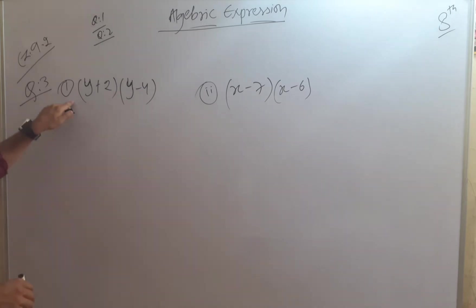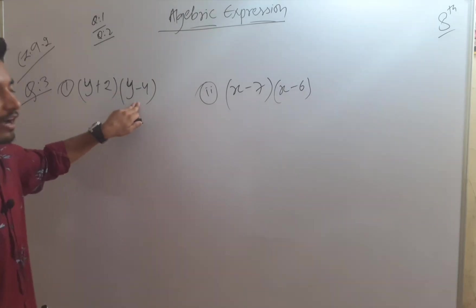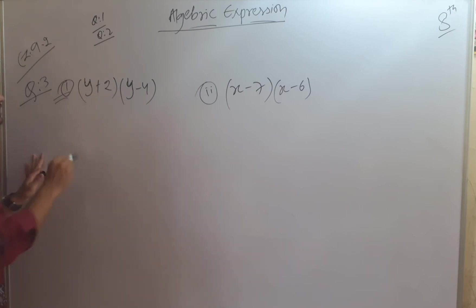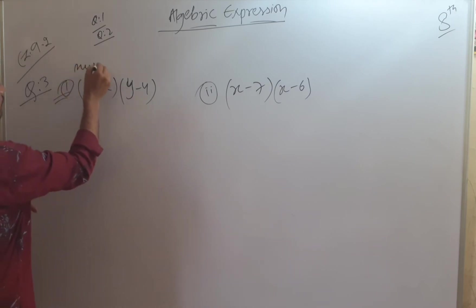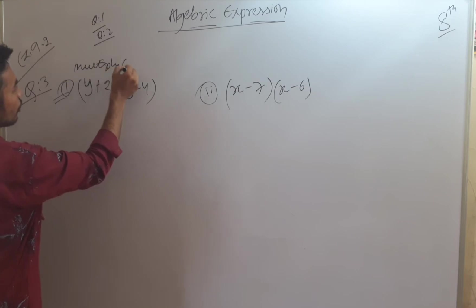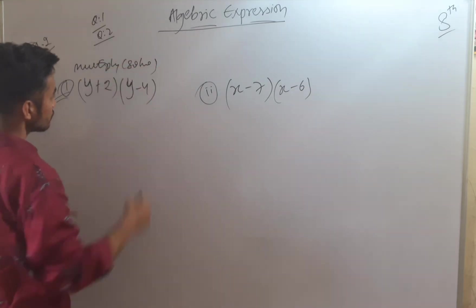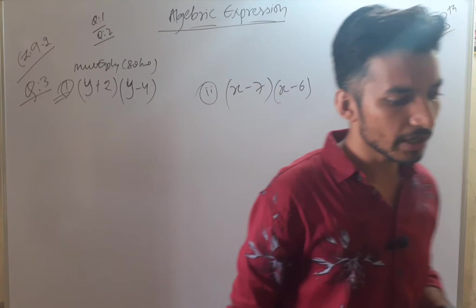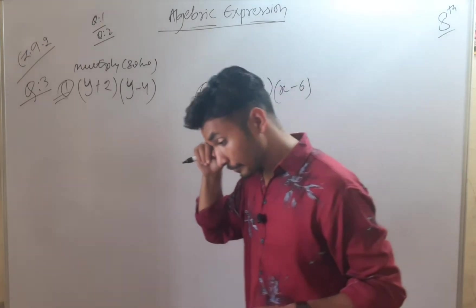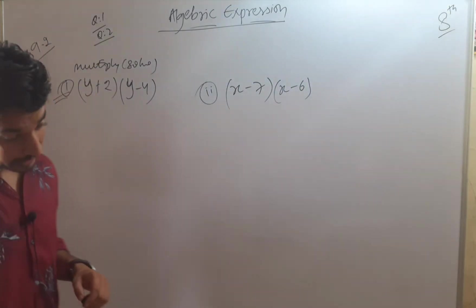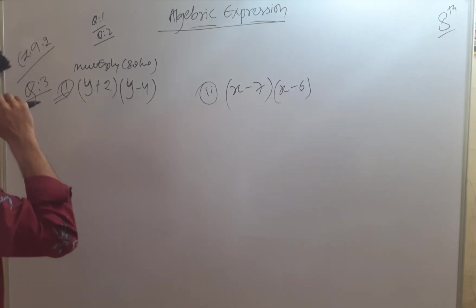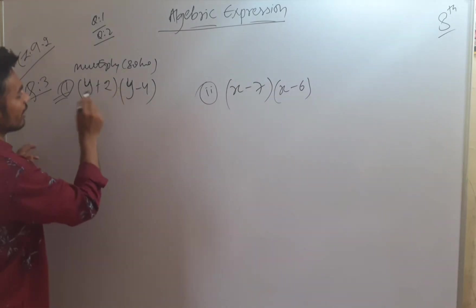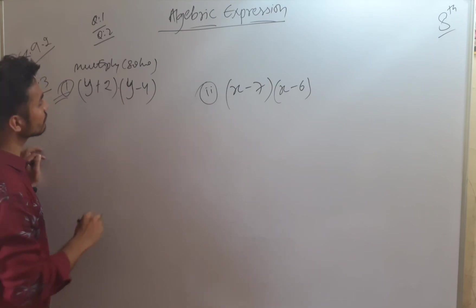We are going to start with the first section: (y+1) and (y-4). Our first section is (y+1) and (y-4). We have to multiply or solve this expression. In the first and second sections we had to do multiplication. In this also we have to multiply the expression — (y+1) into (y-4).